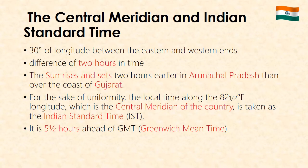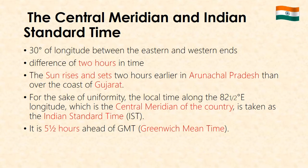The Central Meridian and Indian Standard Time: There are 30 degrees of longitude between the eastern and western ends of the country, meaning a difference of two hours in time between the two ends. The sun rises and sets two hours earlier in Arunachal Pradesh than over the coast of Gujarat. For the sake of uniformity, the local time along 82.5° east longitude, which is the central meridian of the country, is taken as the Indian Standard Time. It is five and a half hours ahead of GMT, that is Greenwich Mean Time.